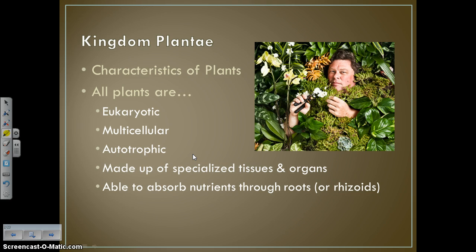So just general characteristics of plants — what makes a plant a plant? All plants are eukaryotic, multicellular, autotrophic, made up of specialized tissues and organs, and able to absorb nutrients through roots or root-like structures called rhizoids. We also know that there are some key cell structures that are unique to plants or important in plant cells, and we'll get to those closer to the end.